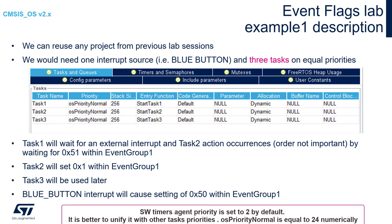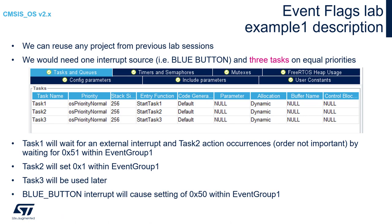Then within the Tasks and Queues tab, please create three tasks: Task1 with startTask1 function, Task2 with startTask2 function, and Task3 with startTask3 function. All of them should have the same priority level, OSPriorityNormal, like our timer task, and the stack size set to 256 bytes.